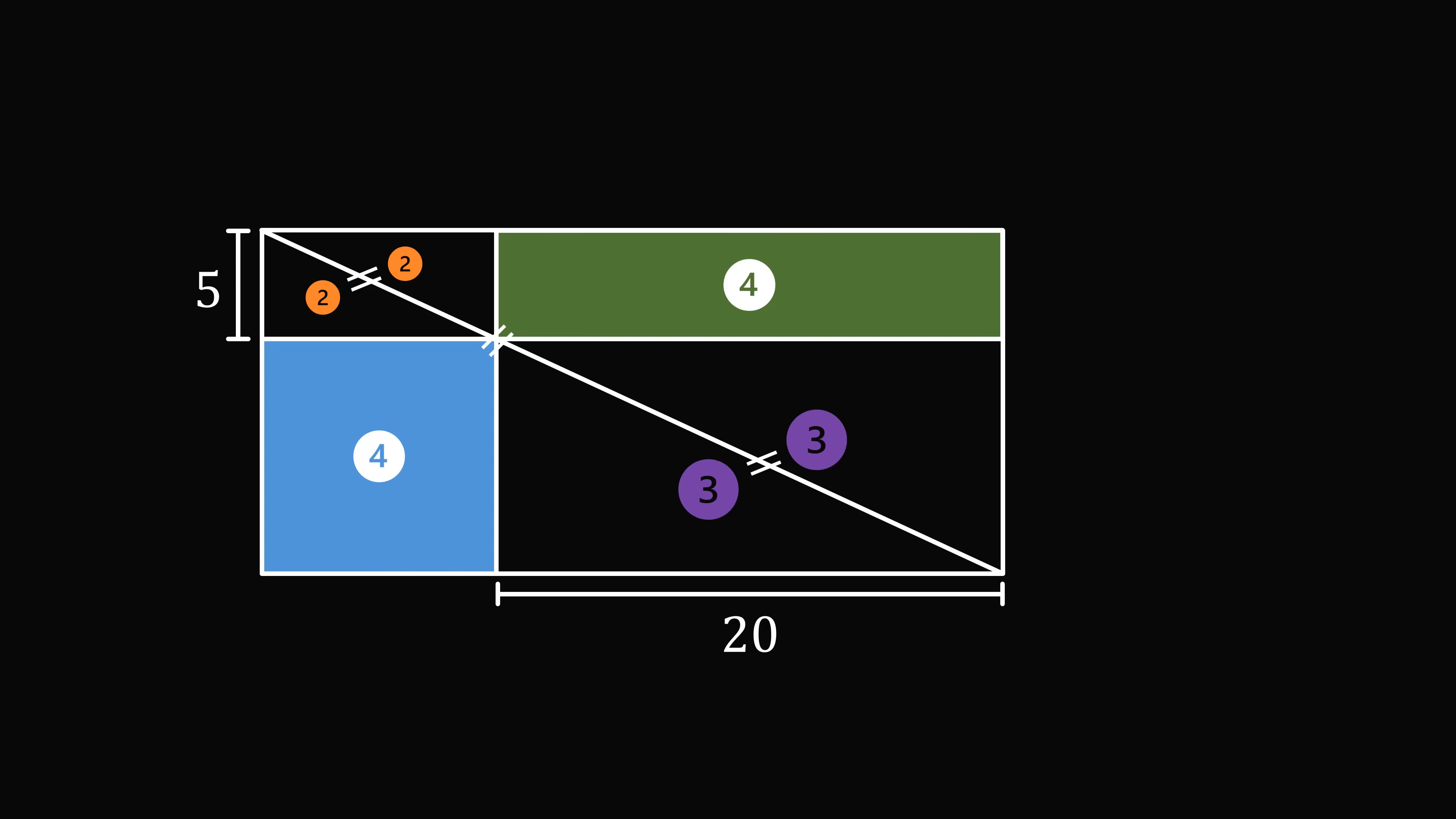But how does that help us solve the problem? Well, what's the area of this green rectangle? We know that its width is equal to 20, and its height is equal to 5. So the area of the green rectangle is equal to 20 times 5, which equals 100. Therefore, the area of the square is also equal to 100.